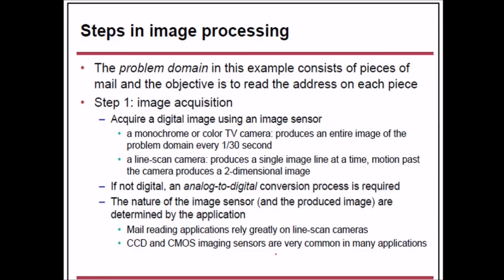The steps in image processing can be illustrated with an example: the problem domain consists of pieces of mail, and the objective is to read the address on each piece. Step 1 is image acquisition — acquiring a digital image using an image sensor such as a monochrome or color TV camera, which produces an image at roughly 1/30th of a second, or a line camera that produces a single image line. If the image is analog, analog-to-digital conversion is required. Mail reading applications rely greatly on line scan cameras; CCD and CMOS image sensors are common in many applications.